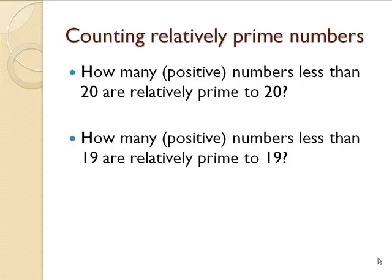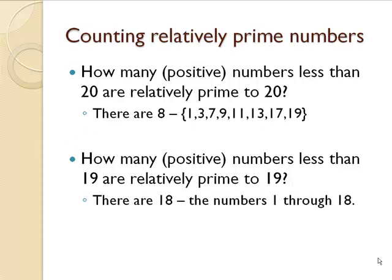How many positive numbers less than 20 are relatively prime to 20? What about 19? Pause the video here and figure that out. It turns out there are 8 numbers less than 20 that are relatively prime to 20.